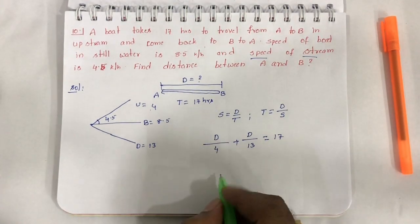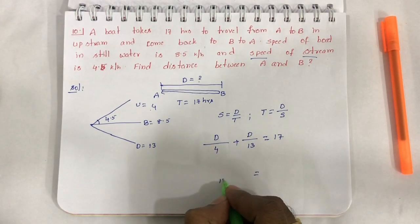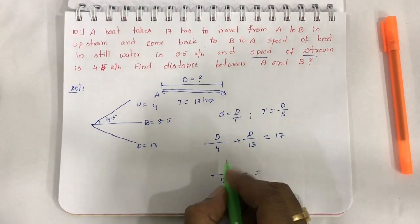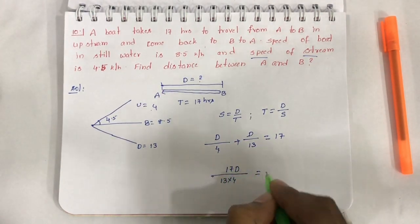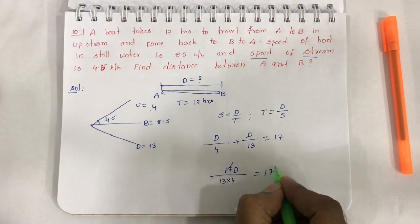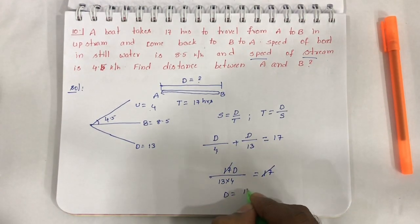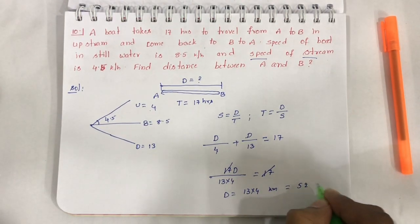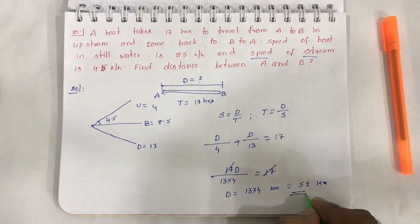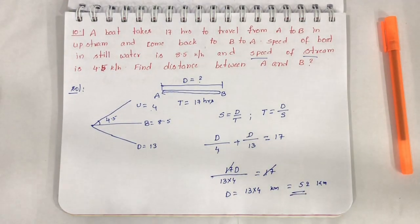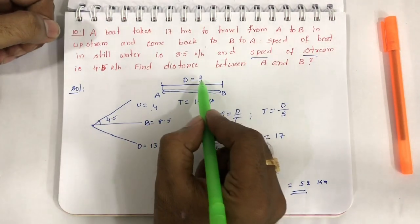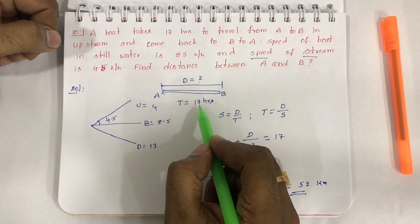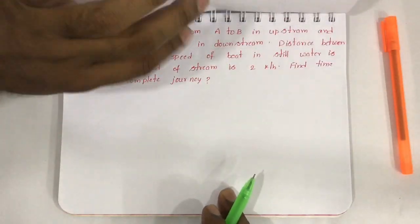Speed of boat is 8.5, speed of stream is 4.5. Upward speed is their difference: 4. Downward speed is their sum: 13. Total time: distance D divided by 4 plus D divided by 13 equals 17 hours. Taking LCM, 17D divided by 52 equals 17. Cancel 17, D equals 52 kilometers. I hope you understood this.